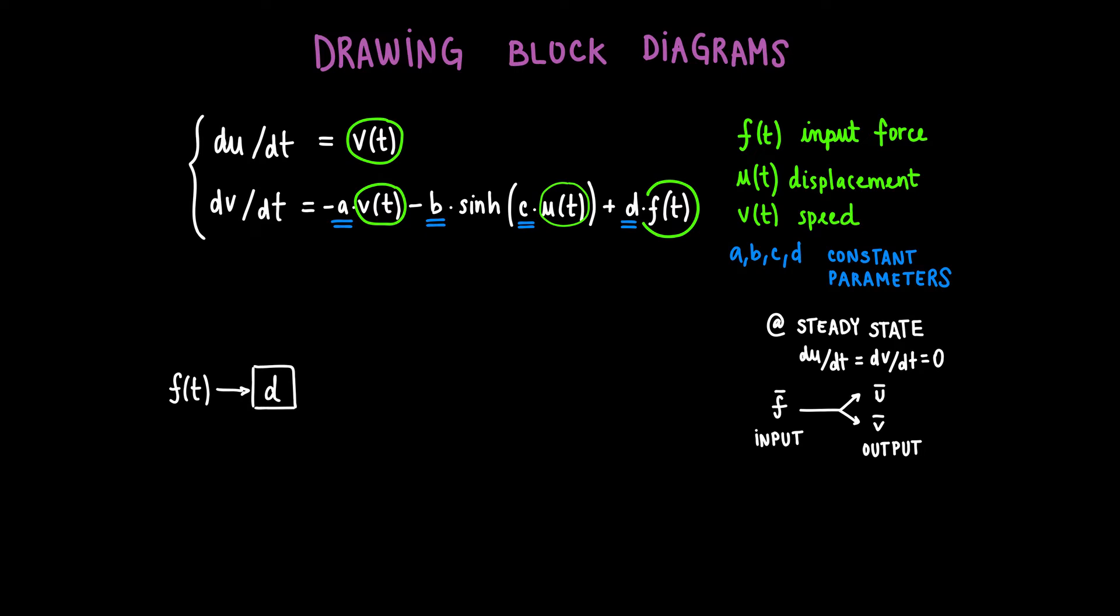The term d times F(t) is one of three terms that added together make dv/dt, so we can add a summation right after d. We will incorporate the other terms to the summation shortly, but like I said, this summation adds up to dv/dt, so we can safely assume that the output after the summation is dv/dt.